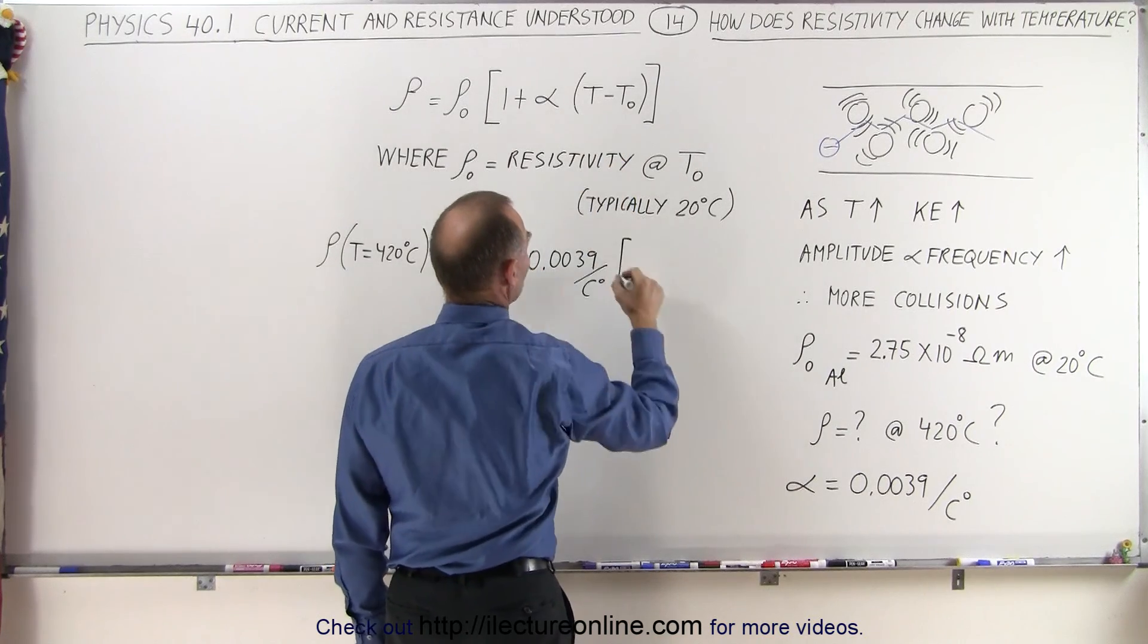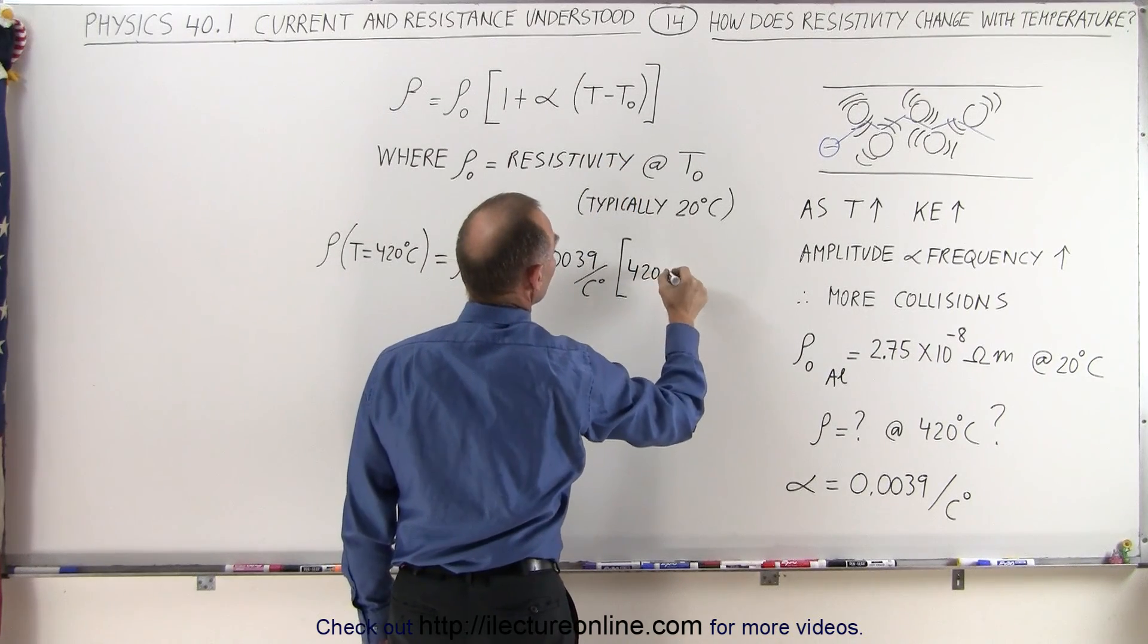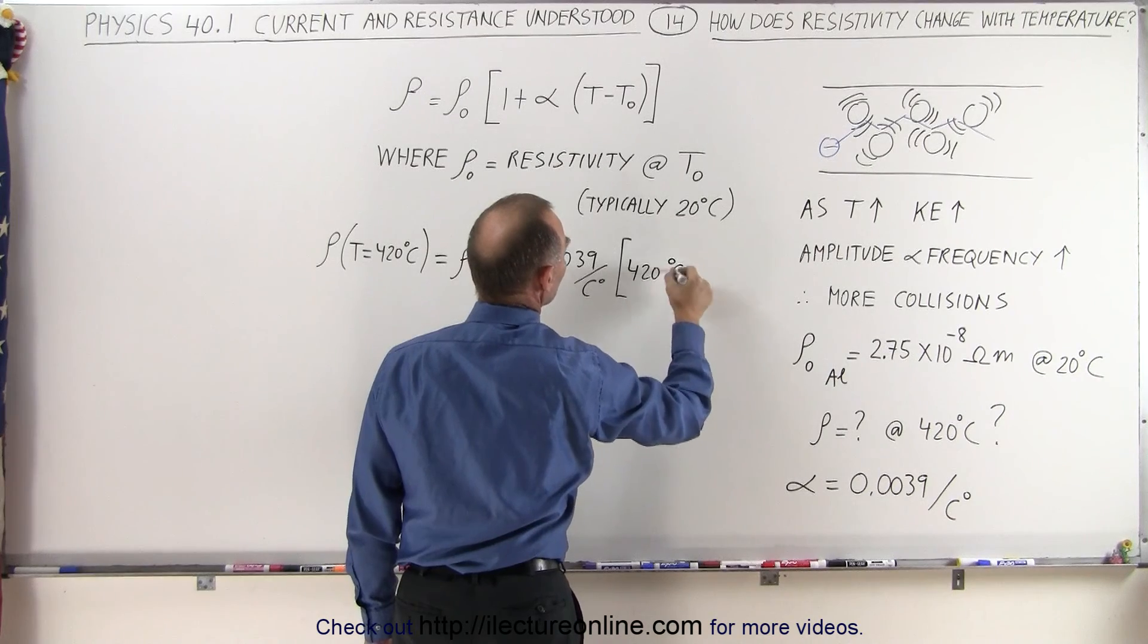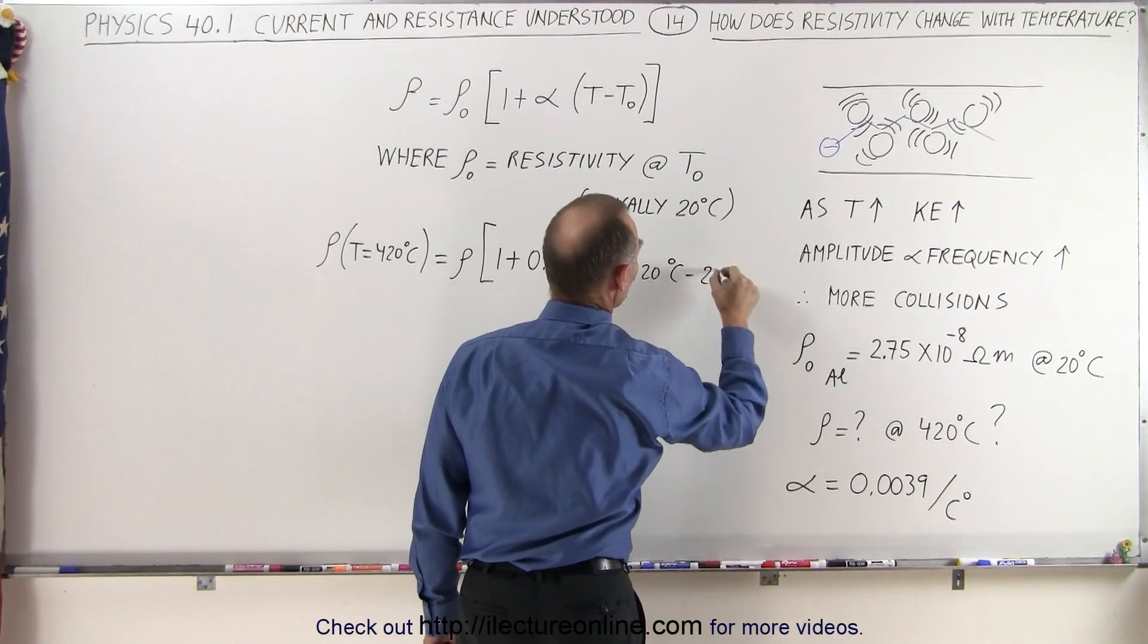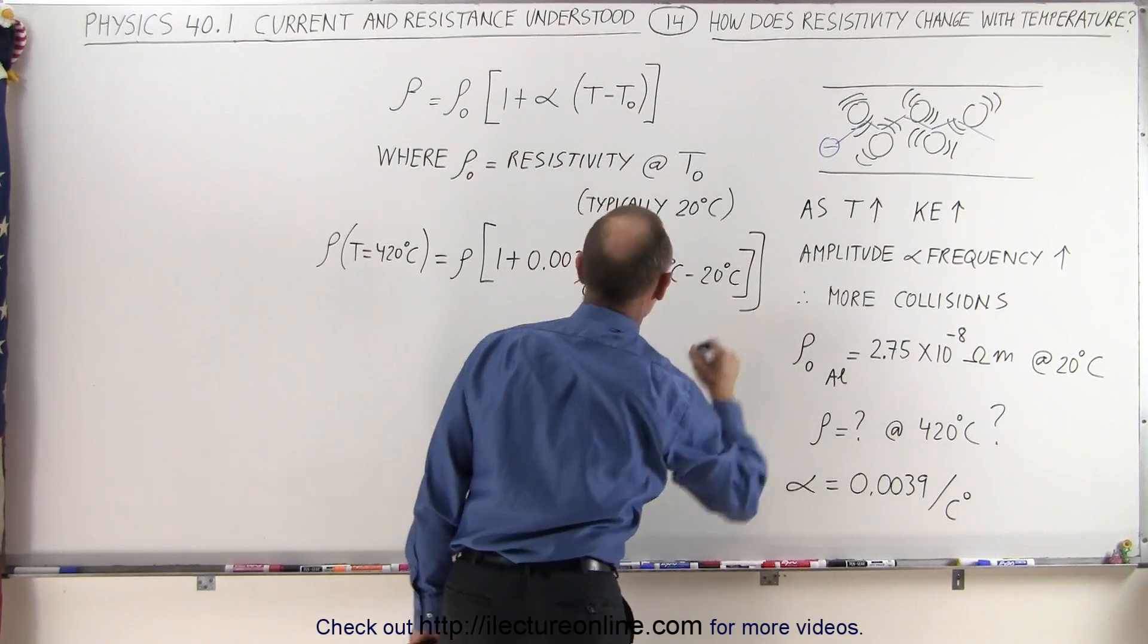...that would be the temperature 420 degrees centigrade minus temperature sub knot, that would be 20 degrees centigrade, like that.